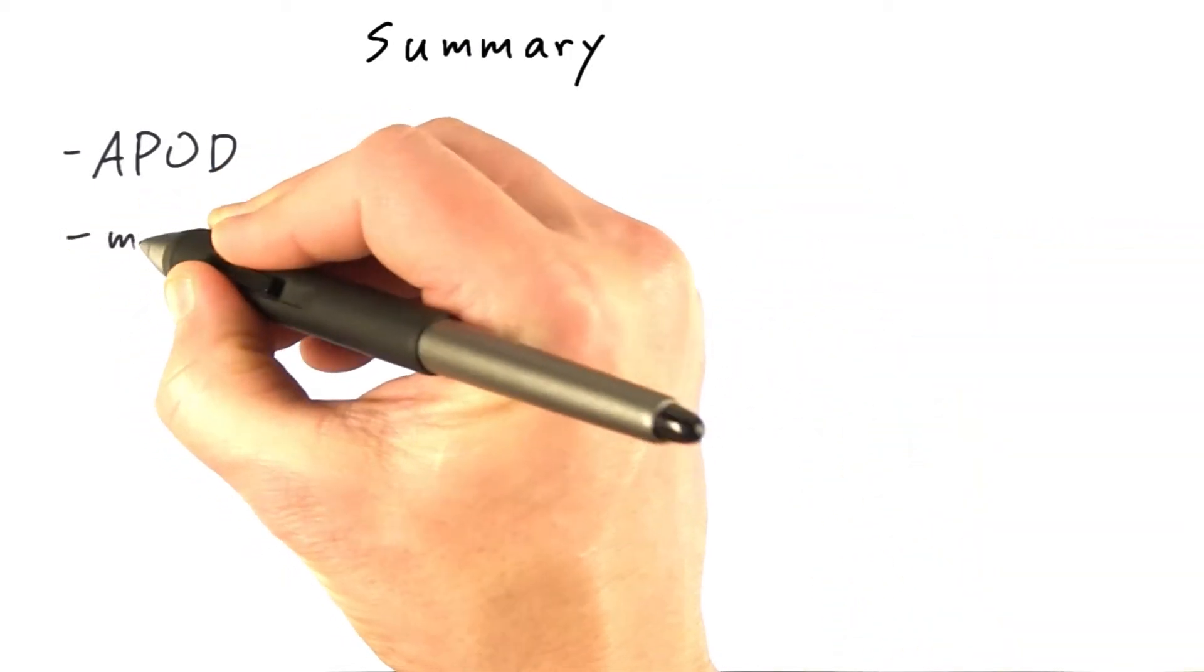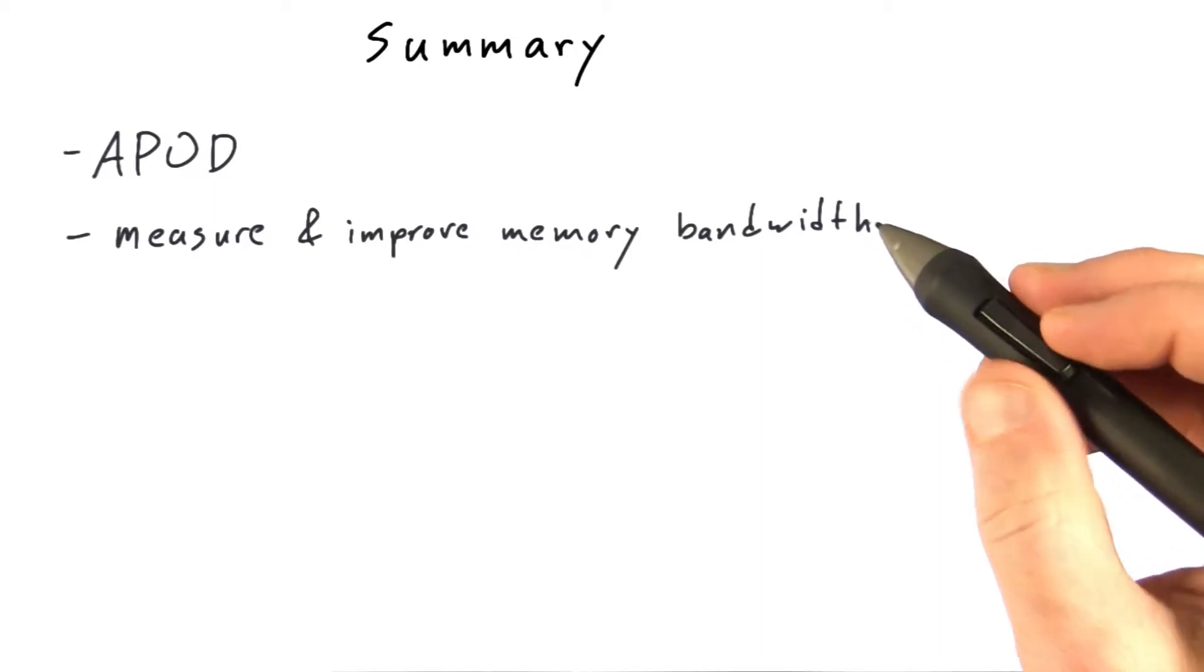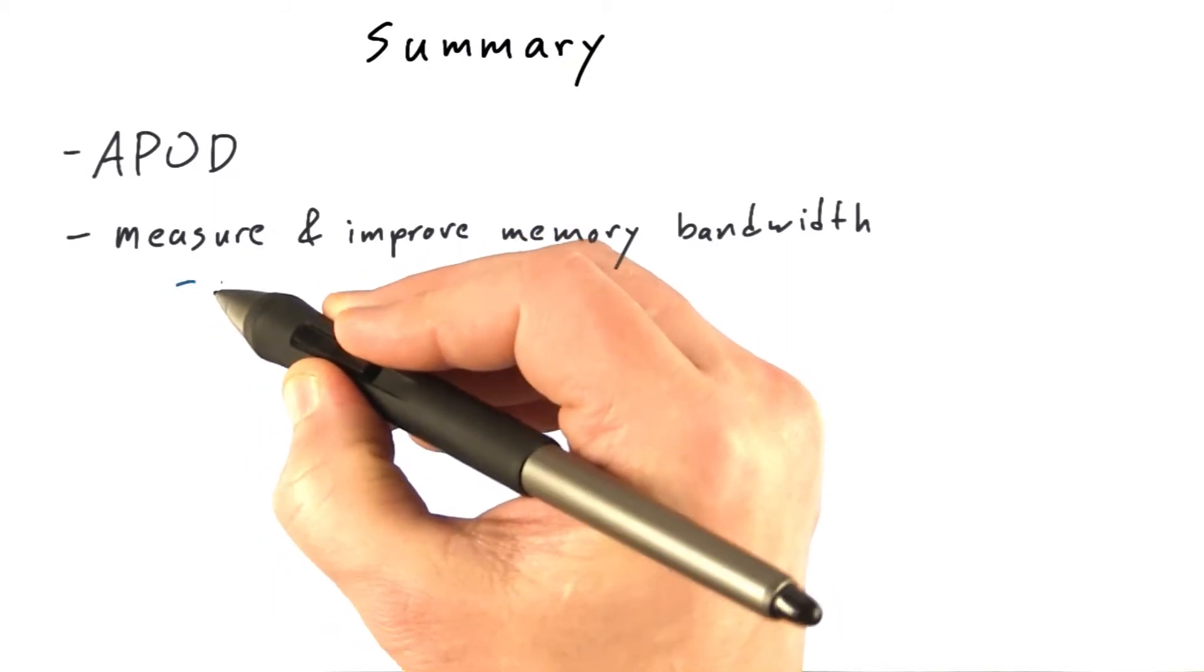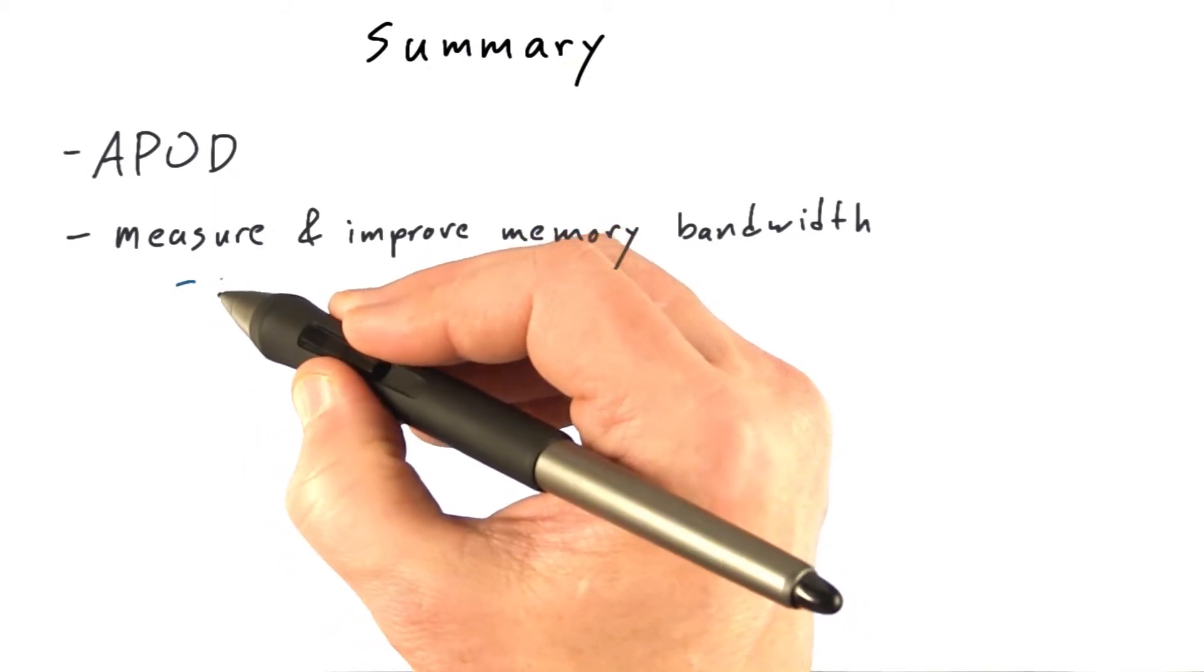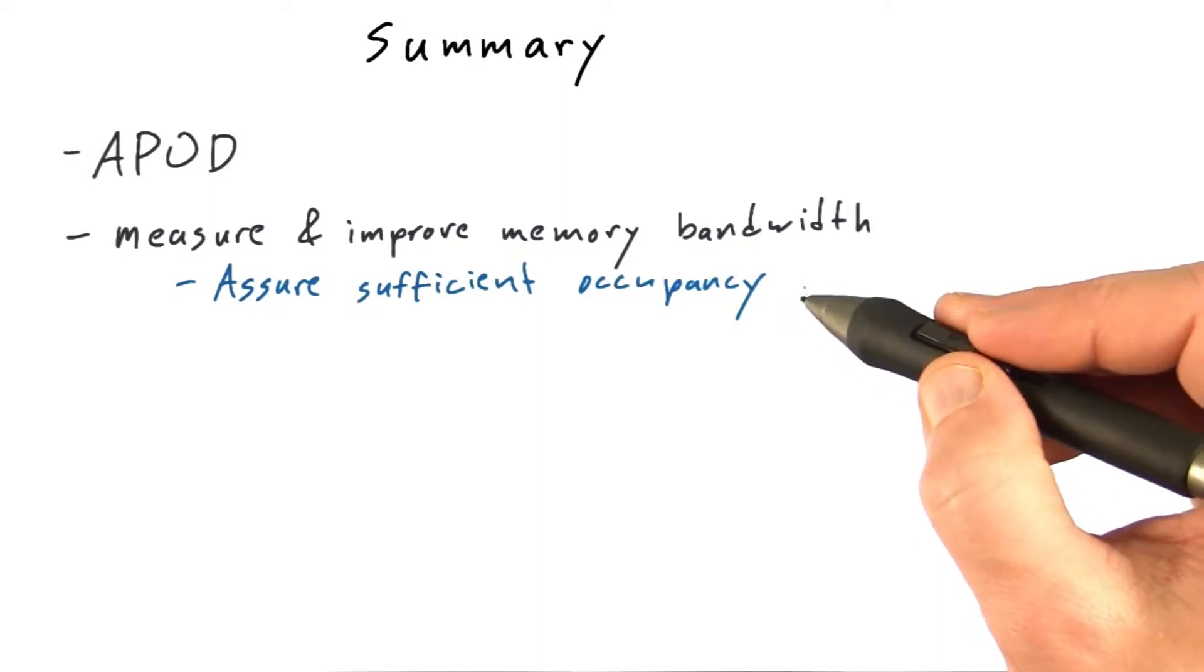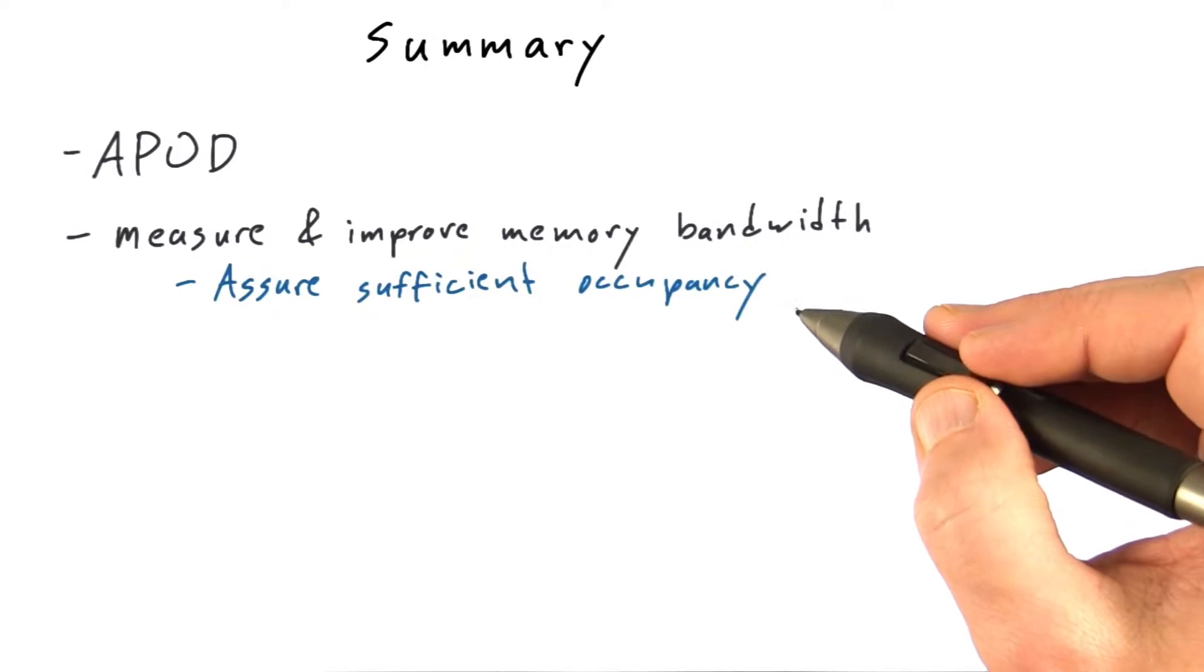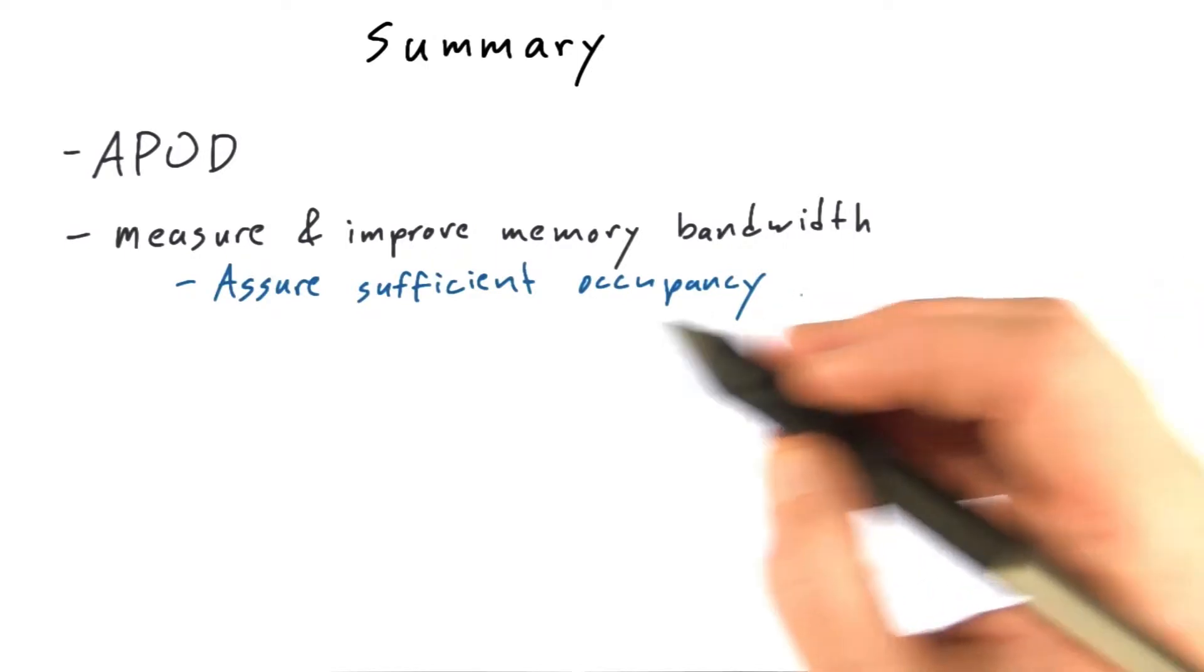Now, most codes are limited by memory bandwidth. So compare your performance to the theoretical peak bandwidth, and if it's lacking, see what you can do about it. Things that will help improve, in order from most to least important, are assure sufficient occupancy. Make sure you have enough threads to keep the machine busy. This doesn't mean having as many threads as you can possibly fit on the machine, but you do need enough that the machine is basically busy.